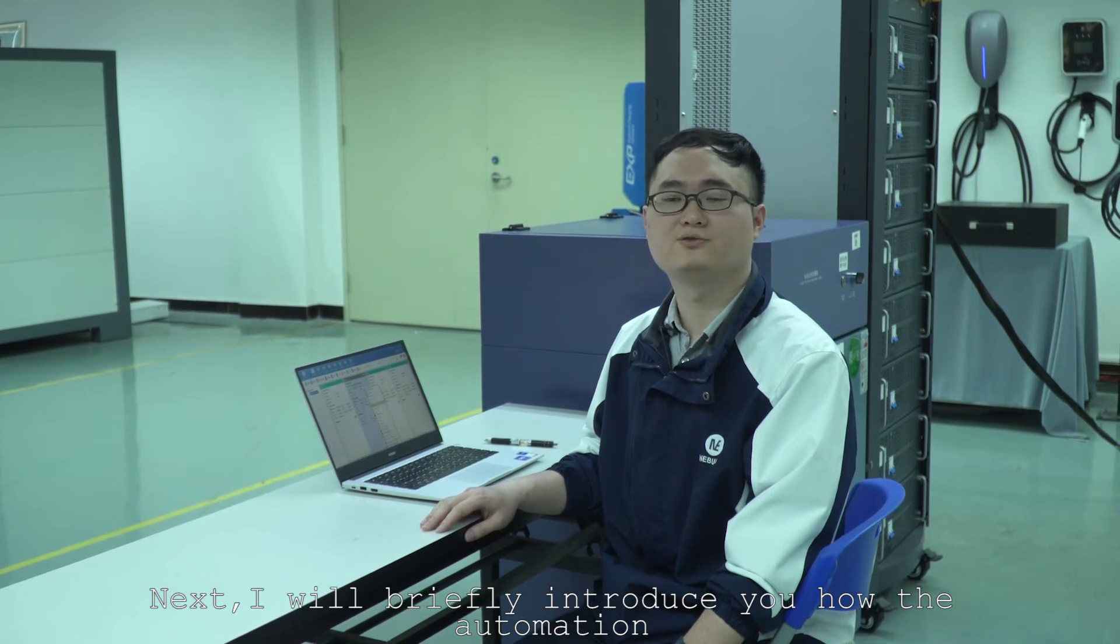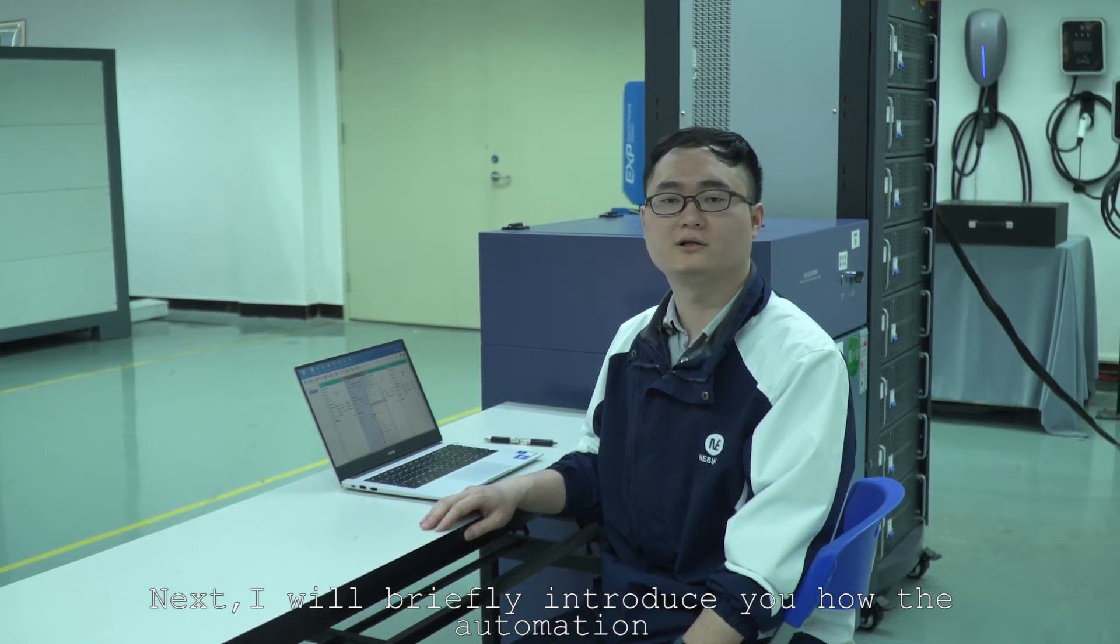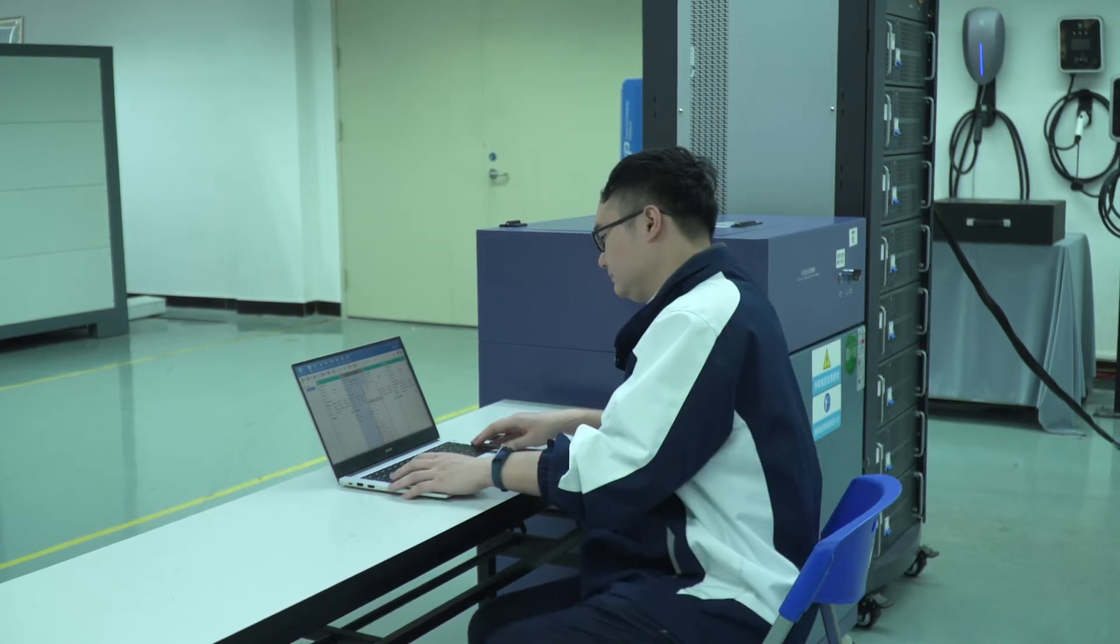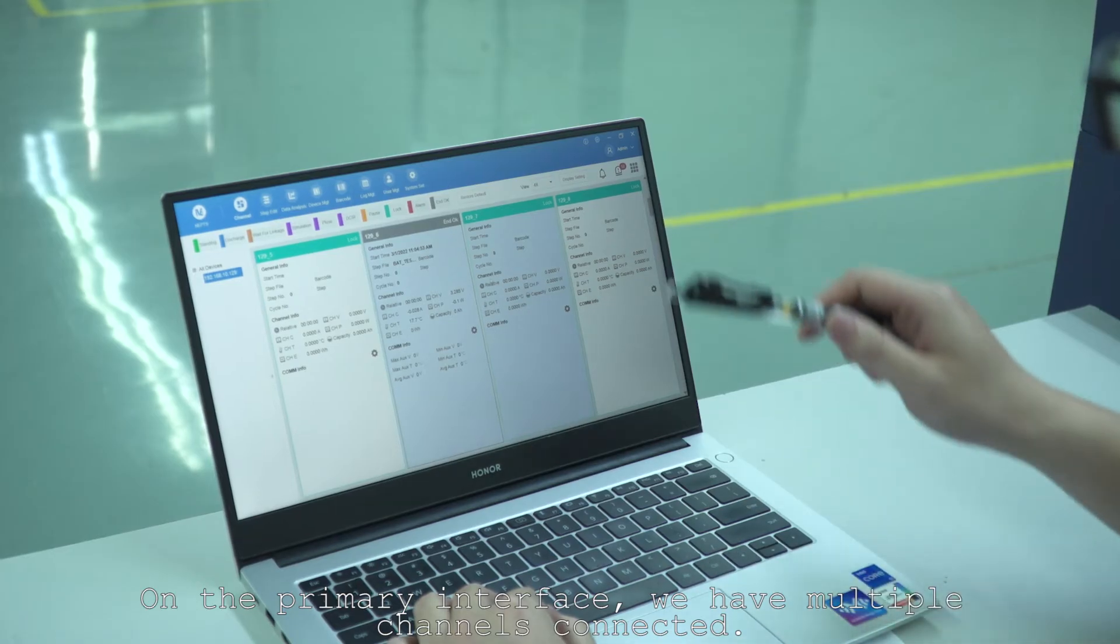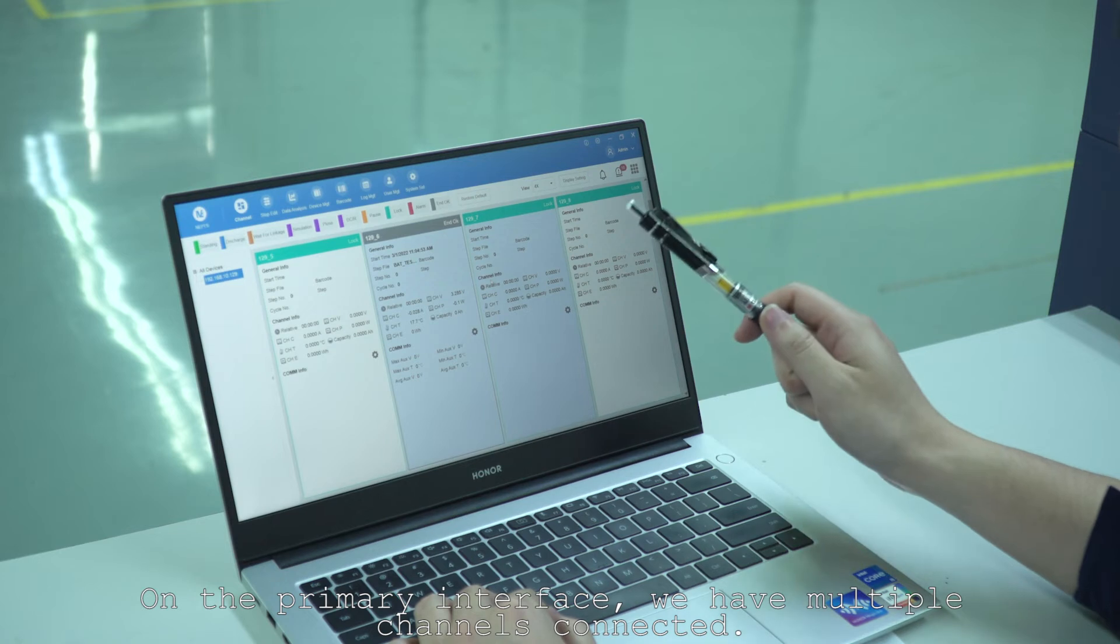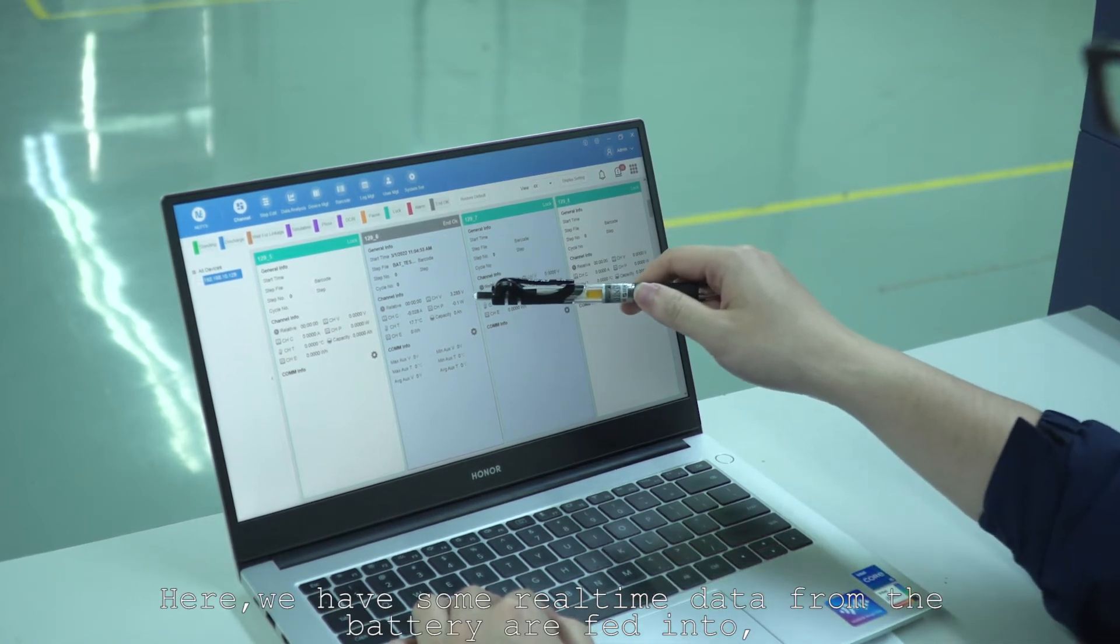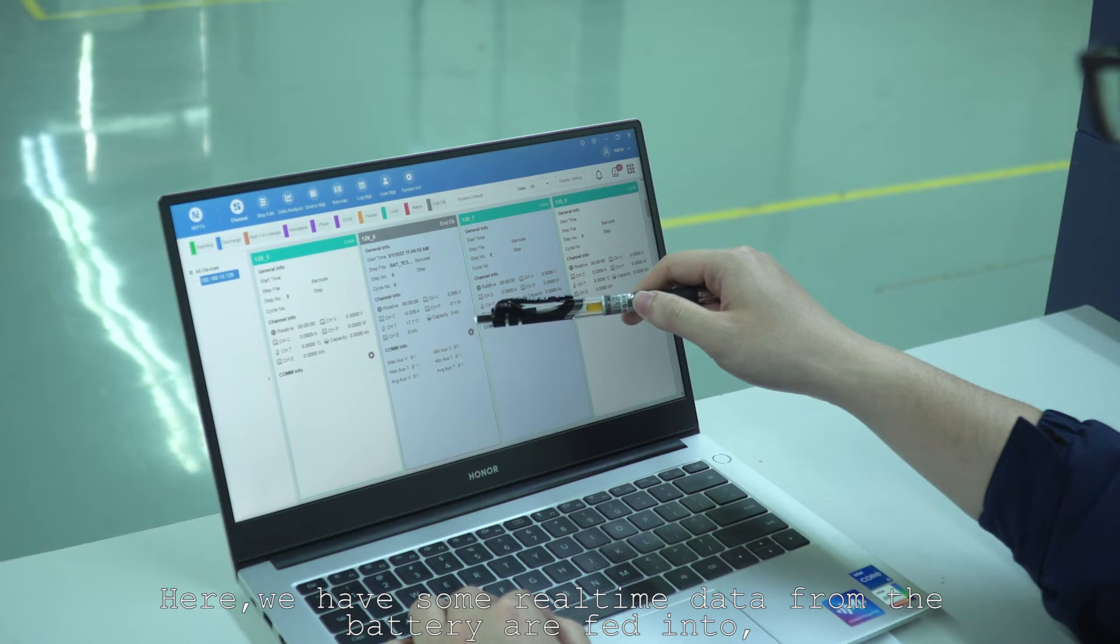Next, I will briefly introduce you how the automation and control software can be used. On the primary interface, we have multiple channels connected. Here, we have some real-time data from the batteries fed in.